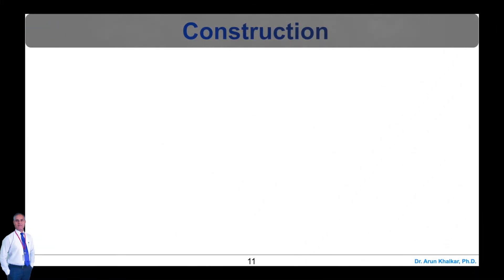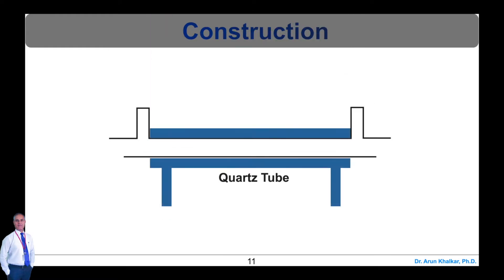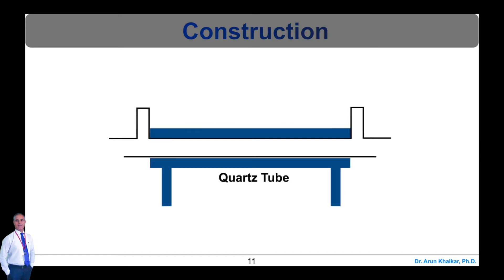Let's see the construction of the CO2 gas laser. This laser is a gas discharge quartz tube of about 1.5 millimeter square cross section and 260 millimeter length. A water cooling system is connected to the tube to maintain the temperature.